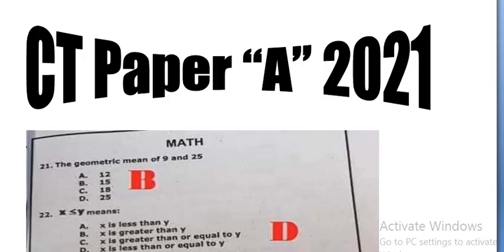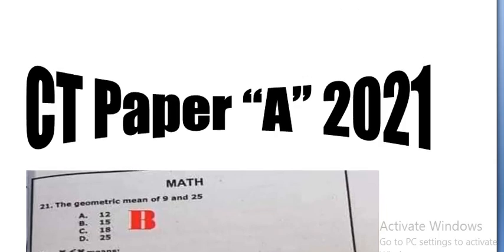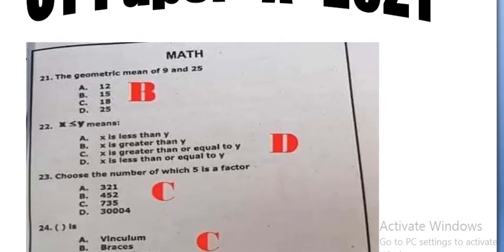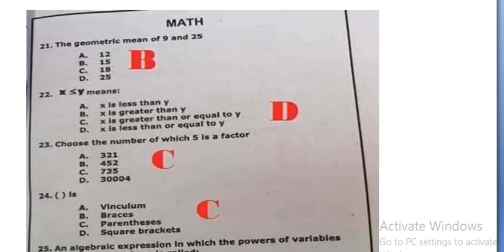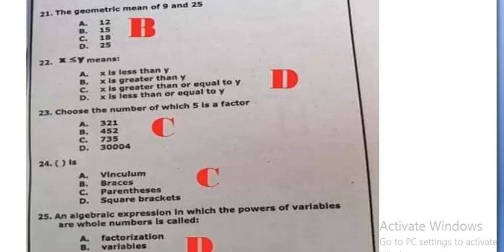Choose a number of which 5 is a factor: 735, option C. A bracket is, this is option C.